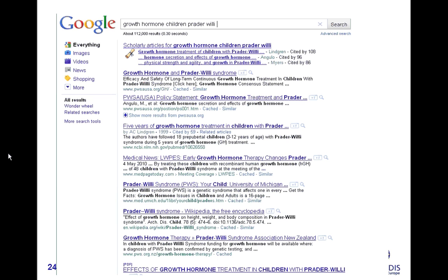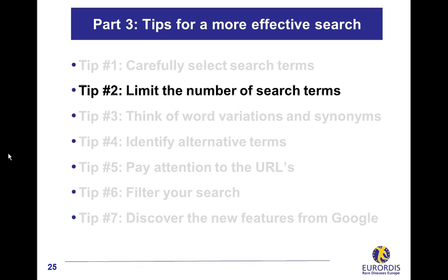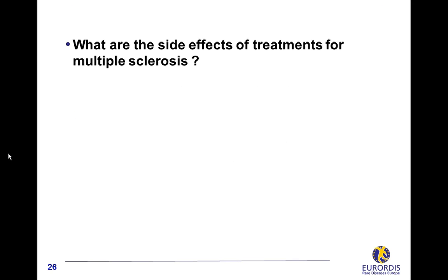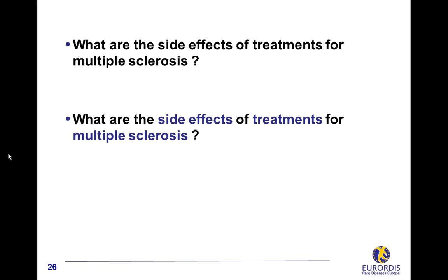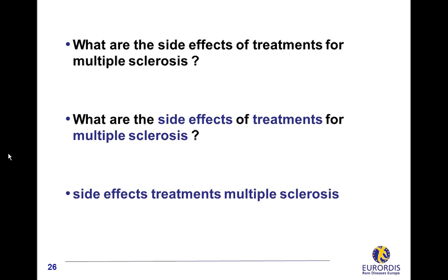Limit the number of search terms. Example: 'What are the side effects of treatments for multiple sclerosis?' After removing the stop words, a good option could be to type 'side effects treatments multiple sclerosis' in the search box. A simpler option would be to focus on the central topic of your search — multiple sclerosis — which helps you broaden the scope of information to more relevant resources, within which you can then search for your specific information.